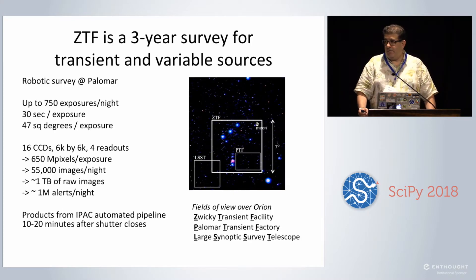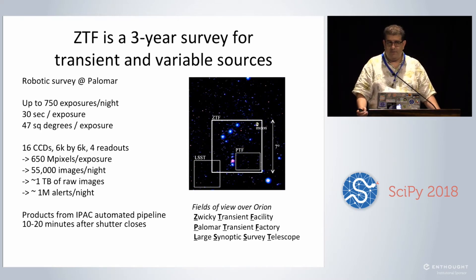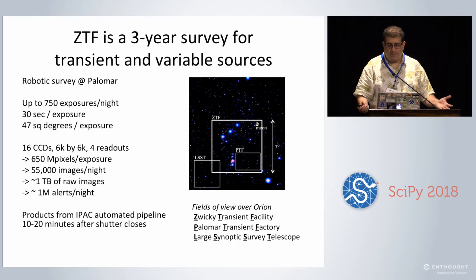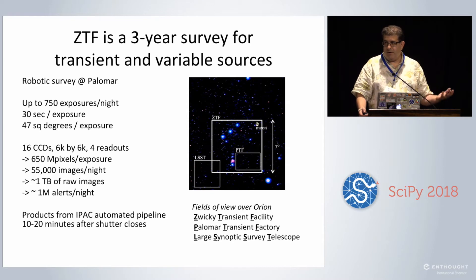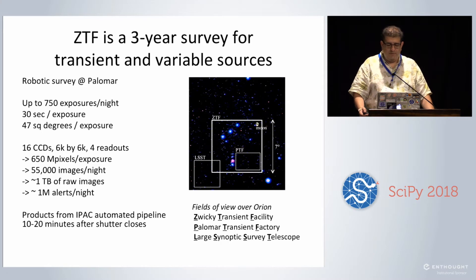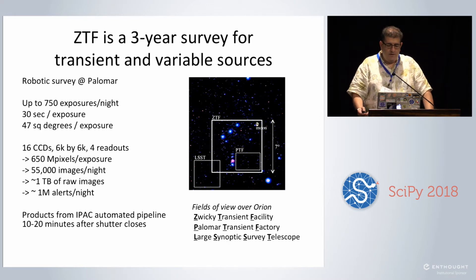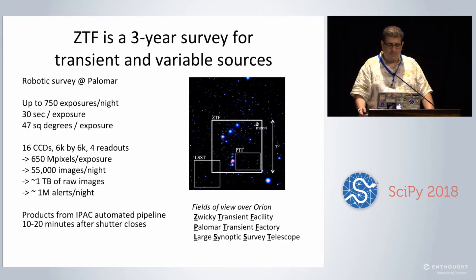ZTF is a survey that's just gotten underway in the last three months. We started commissioning last October, started the survey on March 17th, and we're now releasing public alerts from the public part of the survey as of June 4th. It's a robotic survey conducted at Palomar Observatory in Southern California. On a long winter's night we get up to 750 exposures. It's 47 square degrees per exposure, with 16 CCDs each 6,000 by 6,000, each with four readouts — a 650-megapixel camera covering a huge field of view.